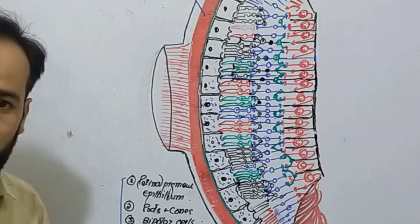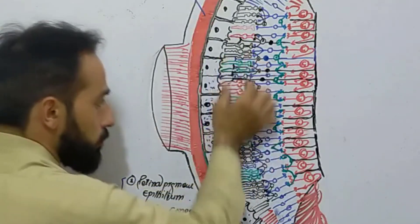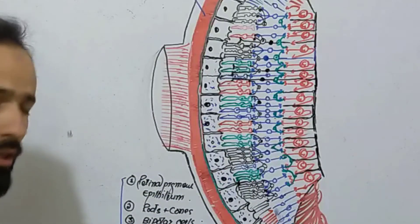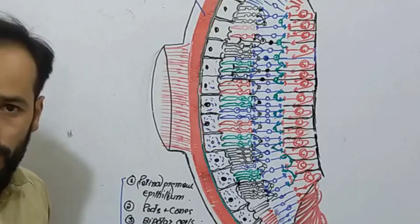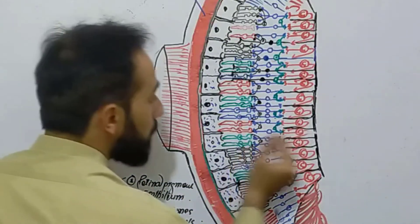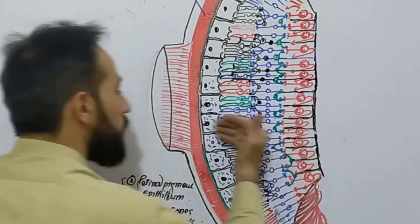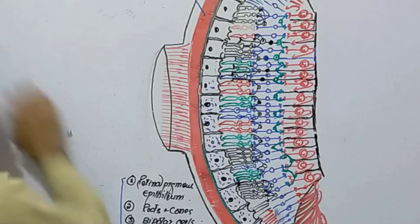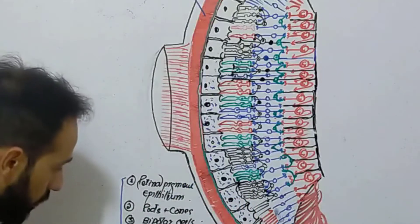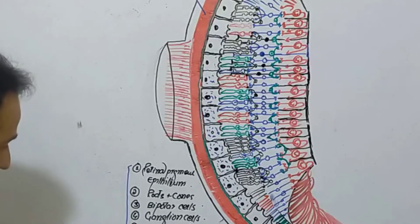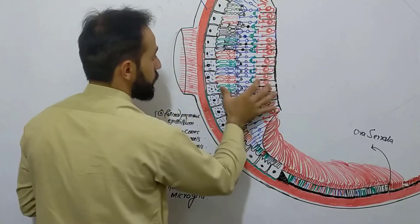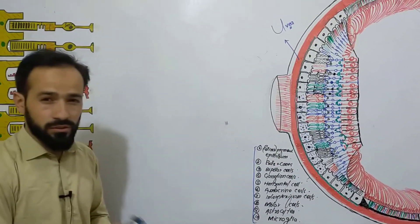Next to the photoreceptors are the bipolar cells, which are actually neurons — some books also say that the rods and cones are types of neurons. The bipolar cells are connected to the ganglion cells, and from the ganglion cells fibers leave the eye going toward your CNS, carrying impulses. In between there are other cells like horizontal cells, amacrine cells, interplexiform cells, Müller cells, astrocytes, and microglia, which I will show in this enlarged diagram.